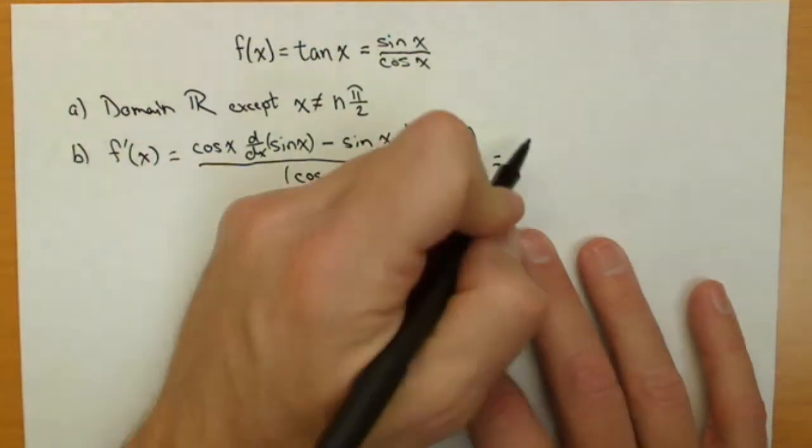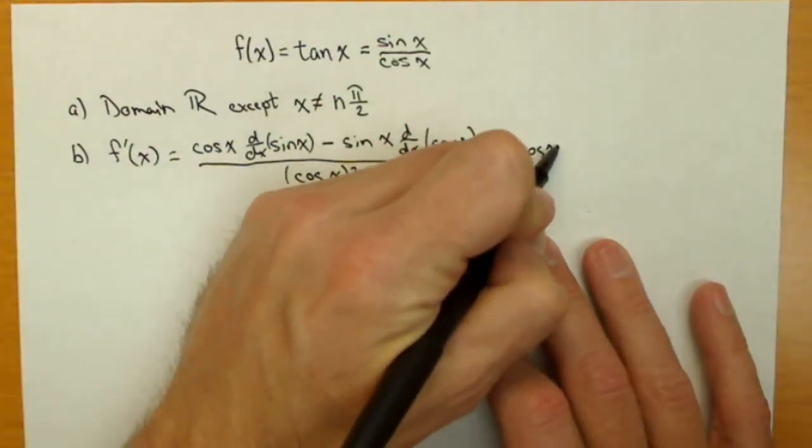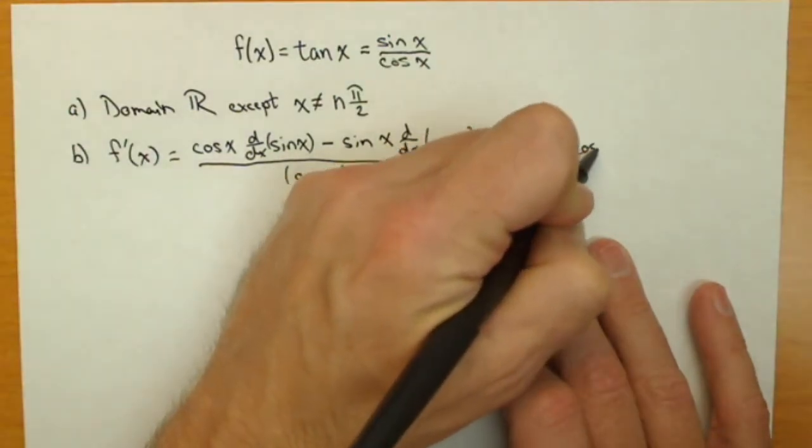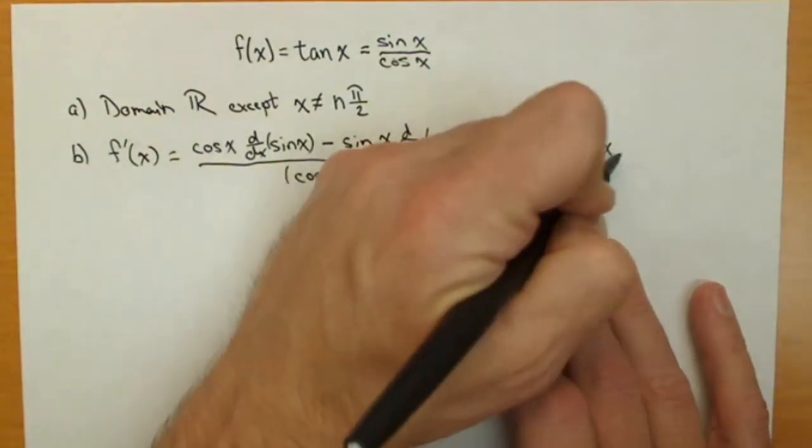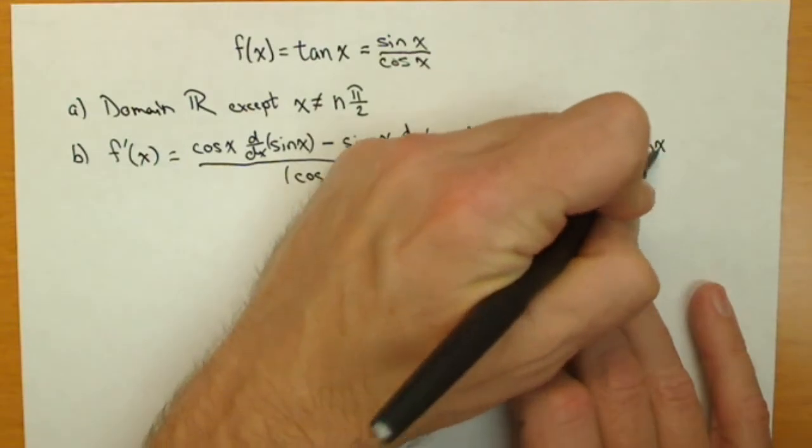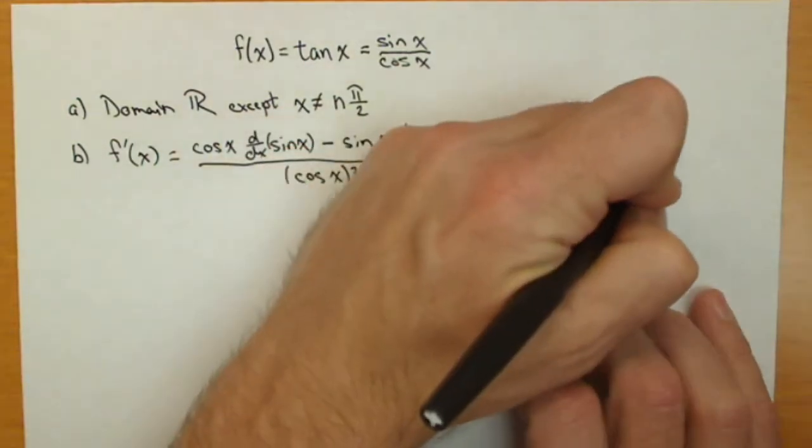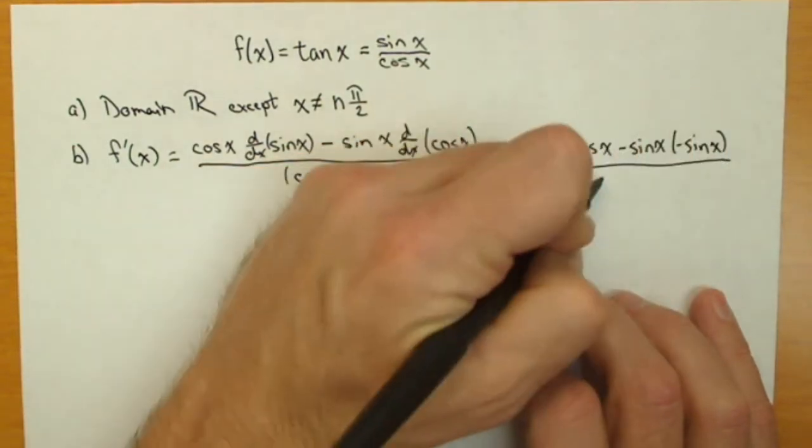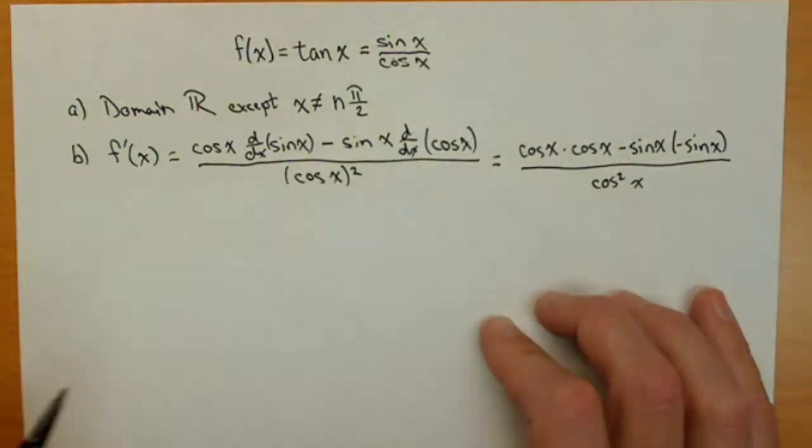Now, let's find those derivatives. So, cosine of x times, derivative of sine is cosine, minus sine of x, derivative of cosine of x is negative sine of x, all over cosine squared of x.